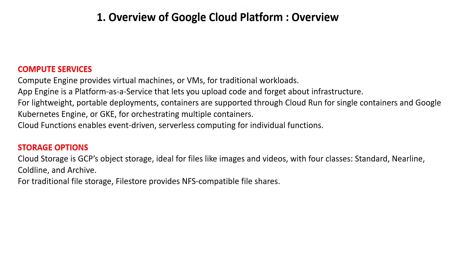Google Kubernetes Engine, or GKE, handles orchestrating multiple containers. Cloud Functions enables event-driven serverless computing for individual functions. Google Cloud Storage is GCP's object storage, ideal for files like images and videos, with four classes — Standard, Nearline, Coldline, and Archive — each offering immediate access at different price points.